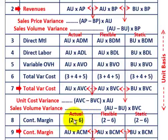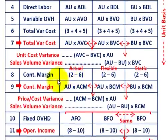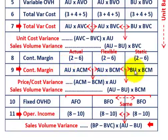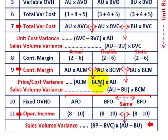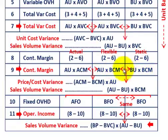For contribution margin, that's simply the difference between revenues and total variable cost. On a per unit basis, the static budget is budgeted units times budgeted contribution margin; actual is actual units times actual contribution margin. The price/cost variance for contribution margin is (actual contribution margin minus budgeted contribution margin per unit) times actual units. The sales volume variance for contribution margin is (actual units minus budgeted units) times the budgeted contribution margin per unit.